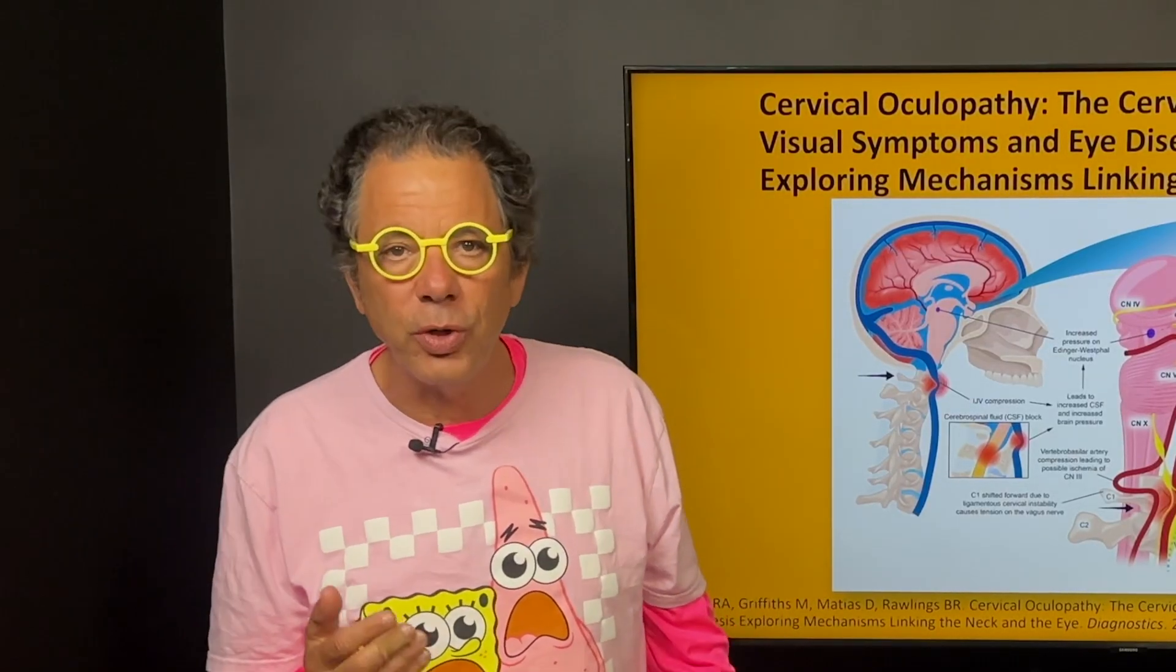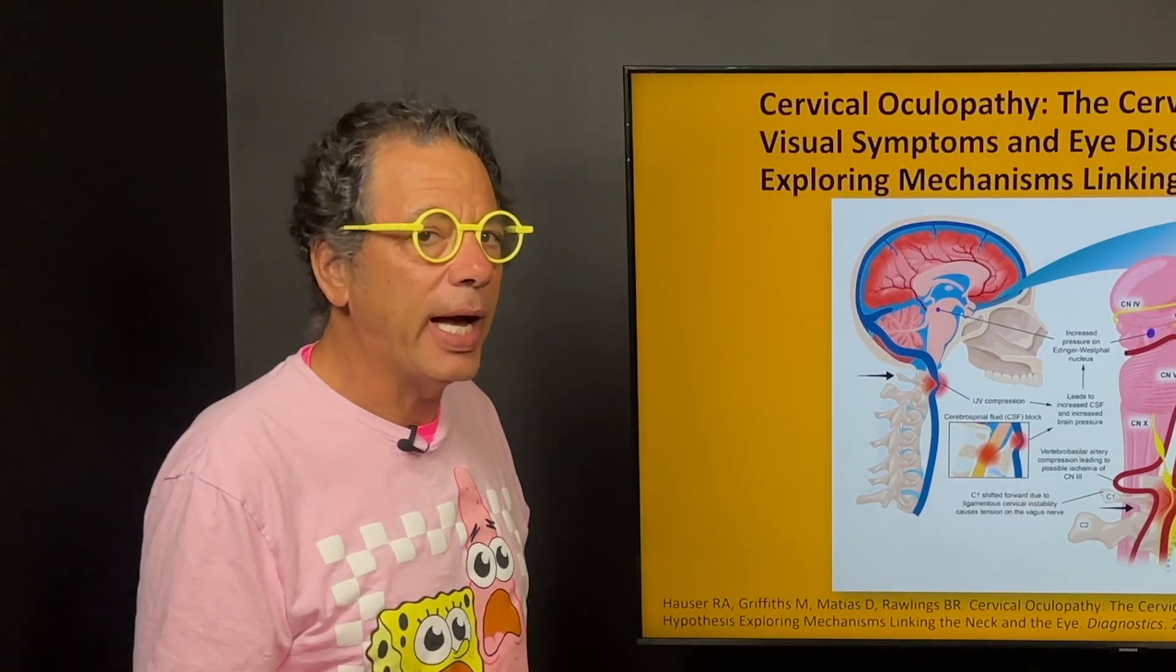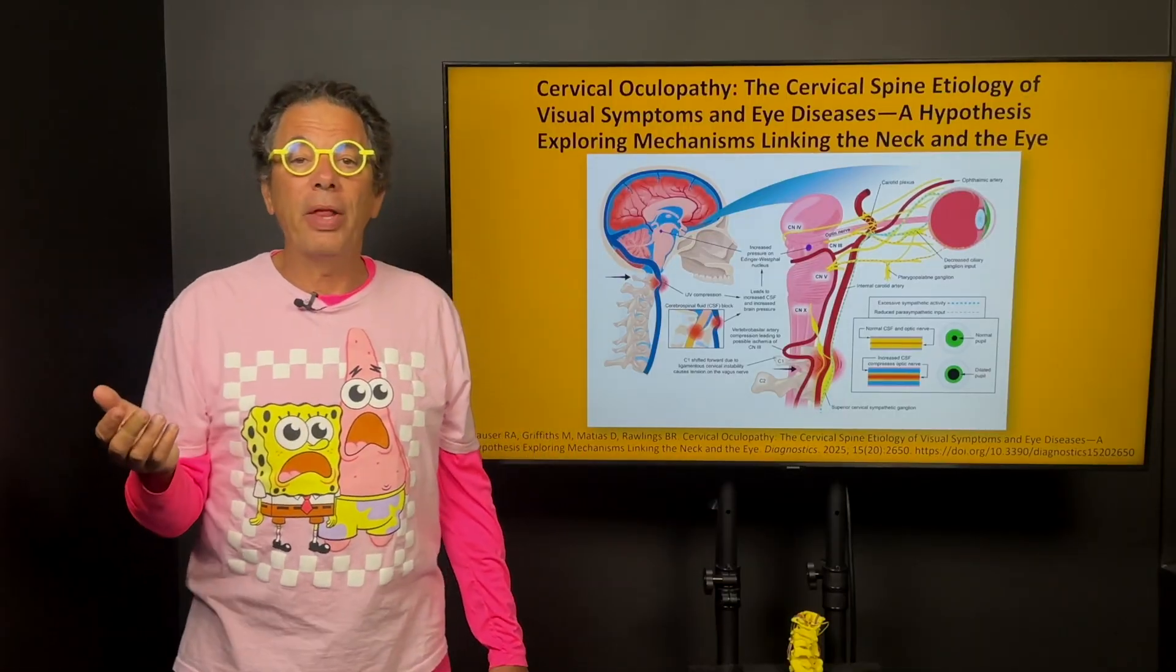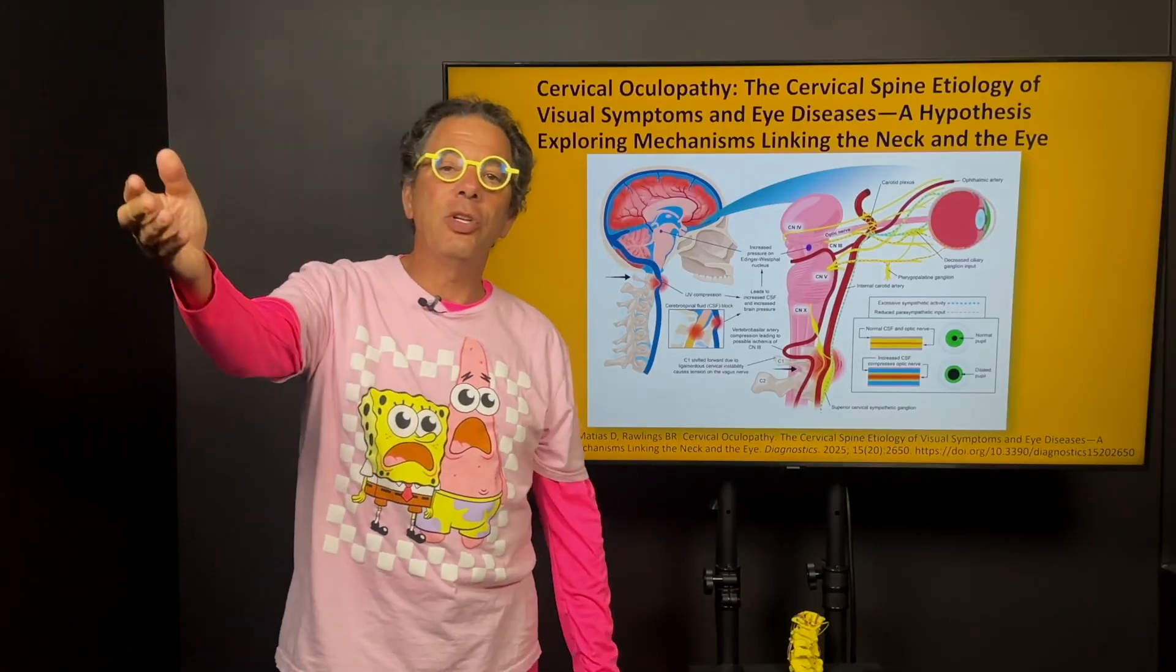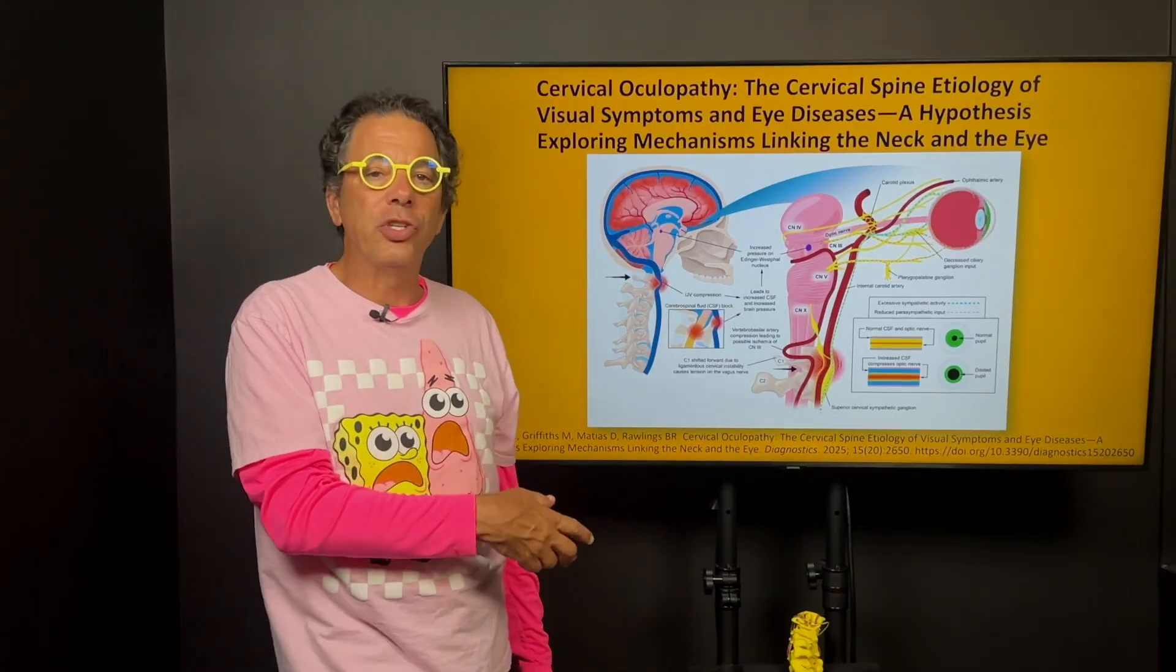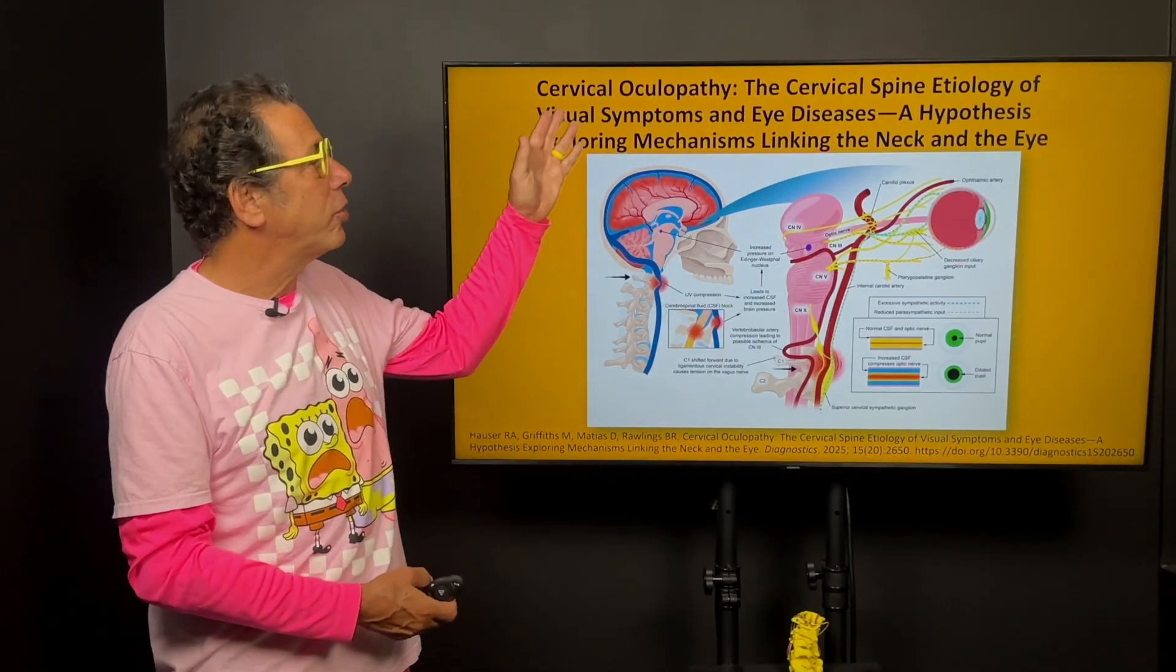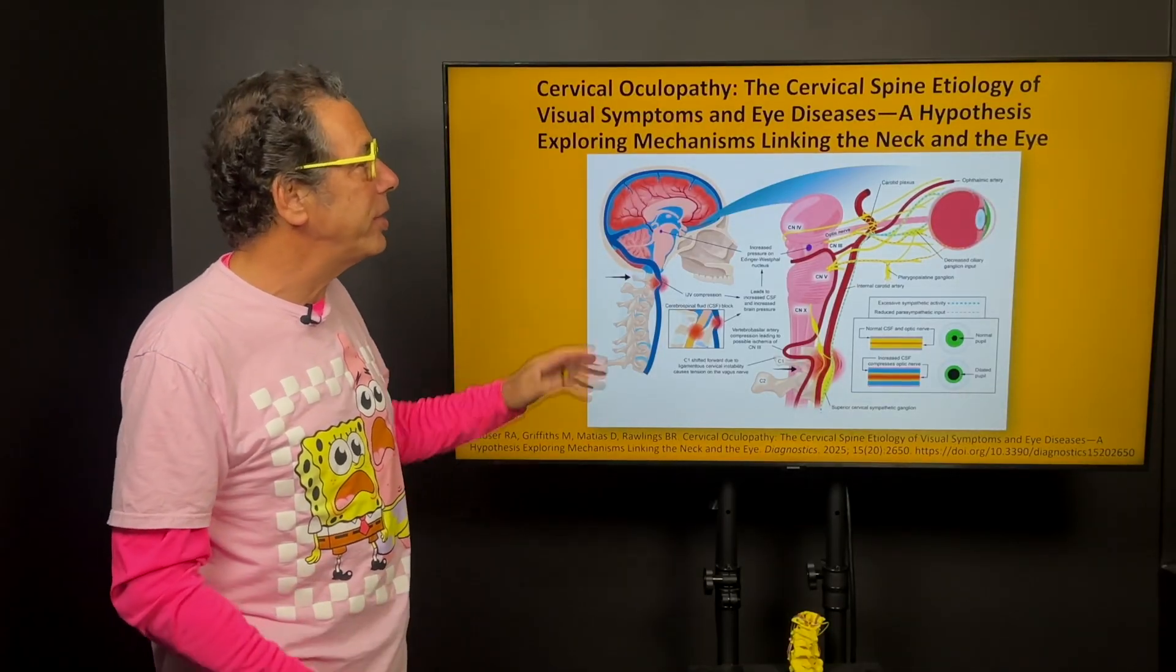It's much easier to treat people before there's been optic nerve or significant damage to the eye. I've even seen people that have had retinal detachments. Obviously retinal detachment, you need to see an ophthalmologist. But if you keep having retinal detachments and they don't know why, you really should come here because you probably have cervical oculopathy, which is at least part of the pathology.